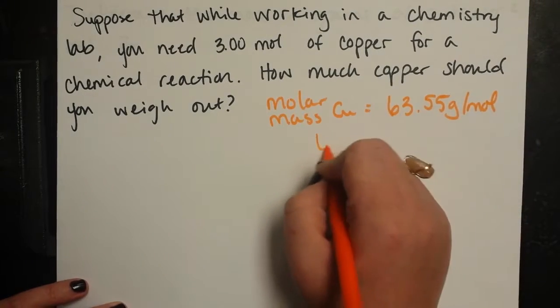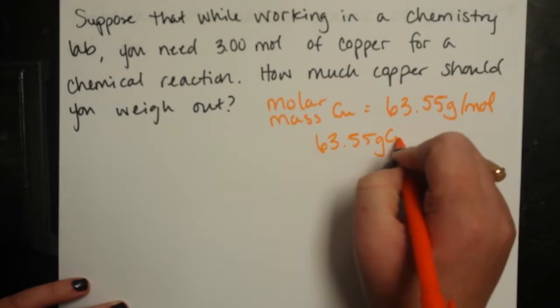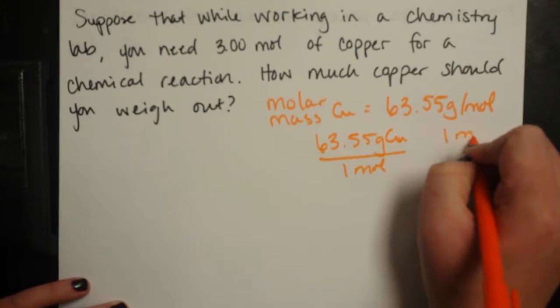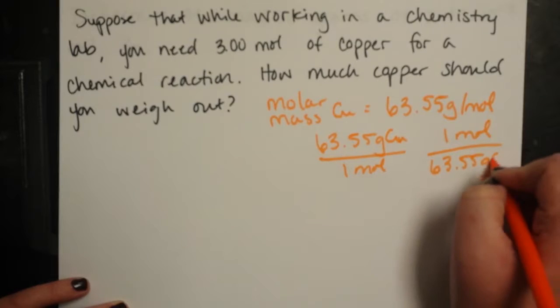I can write this as a conversion factor like this where I've got 63.55 grams of copper for every one mole of copper. And that if I have one mole of copper, that means that it should weigh 63.55 grams of copper.